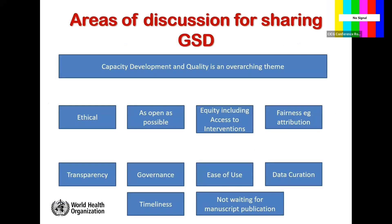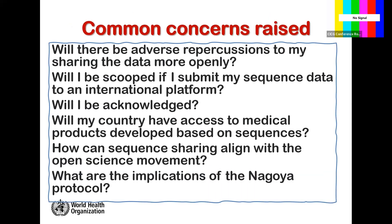Another important point is that the scientific community is heavily involved in generating sequence data, and a big issue for scientists in low- and middle-income settings — but really in all settings — is how they will be acknowledged. This is a non-monetary benefit concern. There are worries about others taking the data, publishing it, and not acknowledging those who generated it, if they haven't had time to develop a manuscript. Questions also arose about access to medical products developed, and how the practice aligns with the open science and open data movement, as well as implications of the Nagoya protocol.